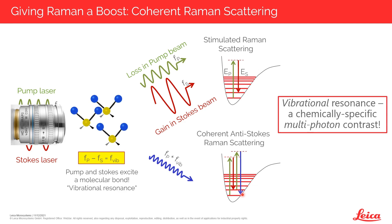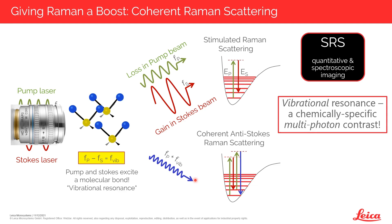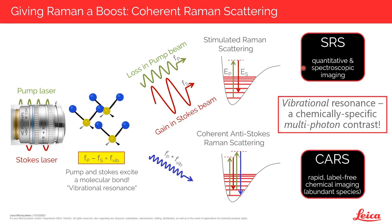To get a contrast mechanism, we couple the two laser beams into a laser scanning microscope and detect either the intensity changes in stimulated Raman scattering or the emission of blue-shifted light in coherent anti-Stokes Raman scattering. These two mechanisms differ slightly in their signal generation, leading to different image properties. SRS imaging is very quantitative and suitable for spectroscopic imaging — the information is mathematically equivalent to spontaneous Raman scattering, but occurring much faster and more efficiently. CARS imaging, by contrast, is a great way to do label-free chemical imaging of highly abundant species; it can be done very fast but has some limitations in quantification. The good news is we have two modalities and can choose whichever best suits our experimental needs.